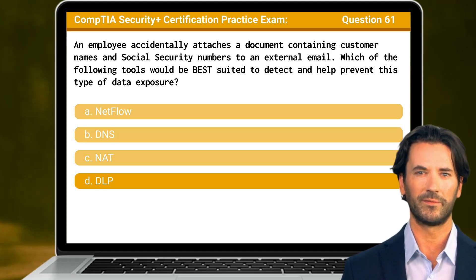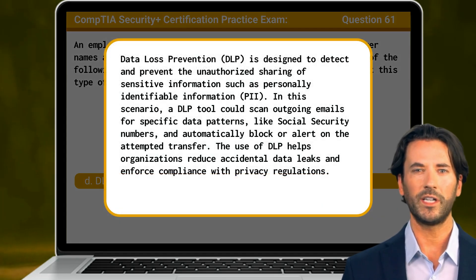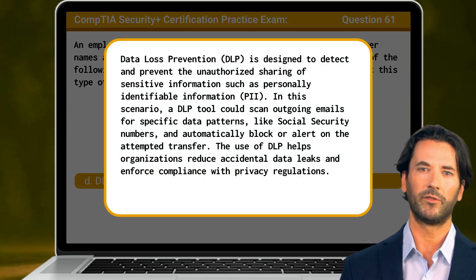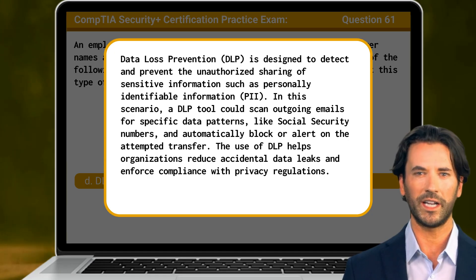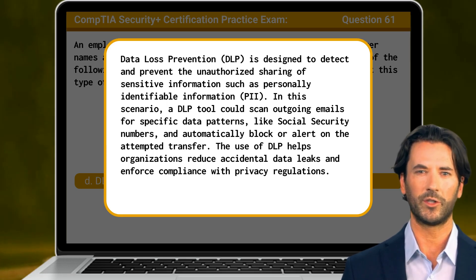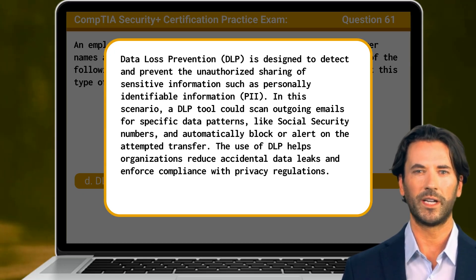The answer is D. DLP. Data loss prevention, or DLP for short, is designed to detect and prevent the unauthorized sharing of sensitive information such as personally identifiable information. In this scenario, a DLP tool could scan outgoing emails for specific data patterns like social security numbers and automatically block or alert on the attempt to transfer. The use of DLP helps organizations reduce accidental data leaks and enforce compliance with privacy regulations.